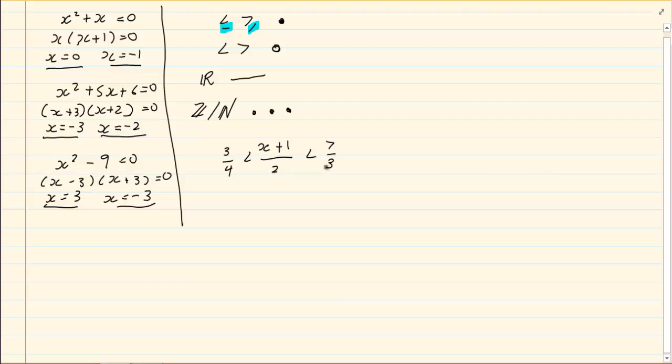Now the concept of solving works exactly like solve for x. I want to get my x alone so I am going to get rid of the 2 first. But when I multiply by 2, what I do on the first part I have to do on every side. So the 2 cancels out but then I would multiply 2 times 3, 6 over 4. So x plus 1 is smaller and equal to 14 over 3.